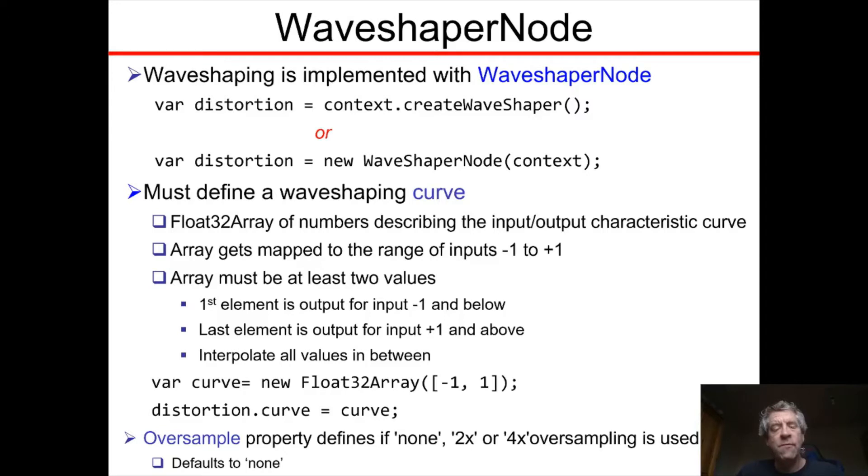Here's a very simple example of a wave shaping curve being defined. We define a new Float32Array, we'll call that array curve but the name doesn't really matter, and that only has two elements.